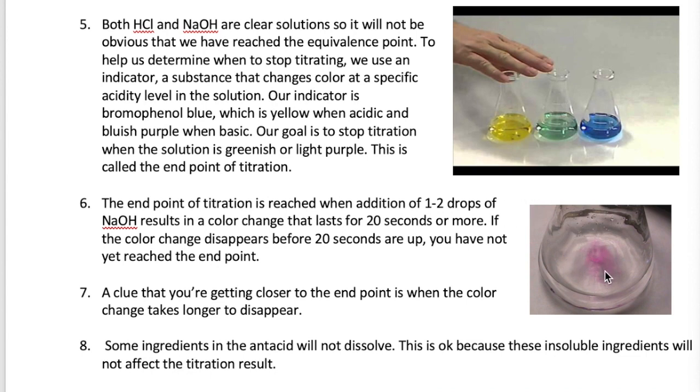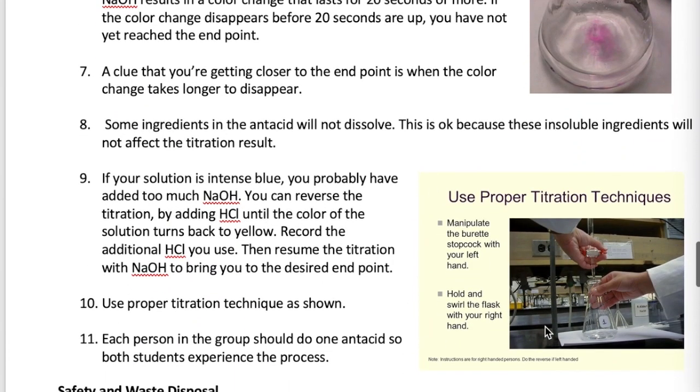As you're adding more NaOH, you will find that the blue color will take longer to disappear after mixing. This is a sign that the endpoint is near. At this point, you want to start adding your NaOH drop by drop. When the green or blue color appears after addition of one to two drops of NaOH and stays for 20 seconds or more, then you know that you have reached the endpoint. The picture here shows the correct way to carry out a titration. One hand should be used to control the buret stopcock and the other hand should be used to swirl the Erlenmeyer flask as the NaOH is being added.